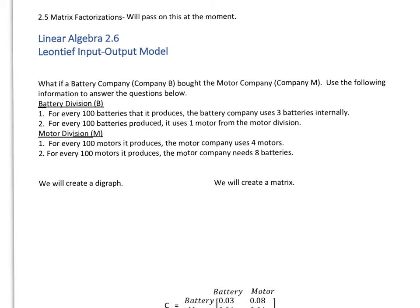And so we have a battery division. For every 100 batteries that it produces, the battery company uses three batteries internally. So what happens is that if we want to make batteries to ship out, we need to use them internally either for models or for running whatever we have going on in our company. But we use our own stuff internally. Similarly, if we need motors, for every 100 batteries produced, it uses one motor from the motor division.